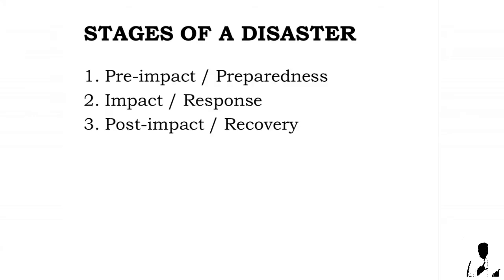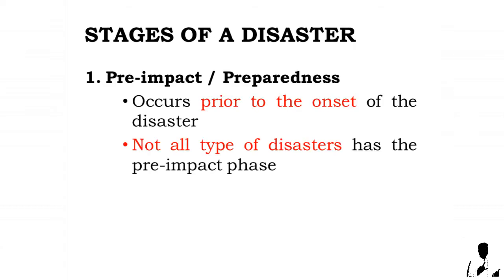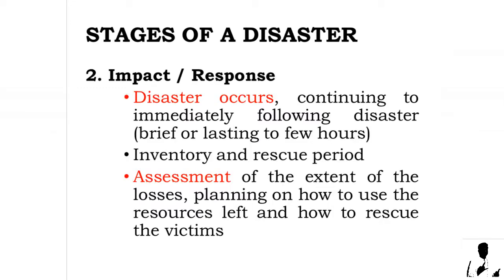The stages of a disaster are as follows: one, pre-impact or preparedness; two, impact or response; and three, post-impact or recovery. The pre-impact or preparedness stage occurs prior to the onset of the disaster. Note that not all types of disasters have a pre-impact phase.